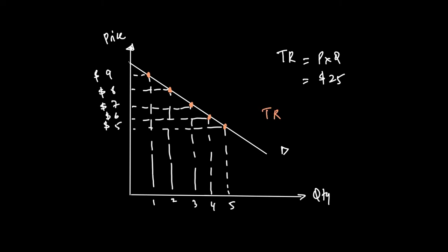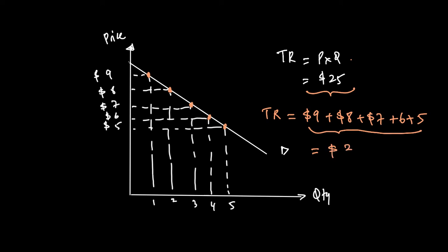Total revenue under price discrimination — charging each consumer what they are willing to pay — is $9 + $8 + $7 + $6 + $5 = $35. Rather than the $25 earned under a single price, we now earn $35, so total revenue is higher by $10 due to first degree price discrimination.